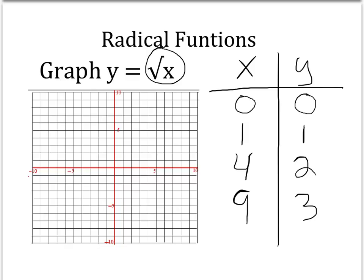So at this point we just graph our points. We start off at (0, 0), go up to (1, 1), then over to (4, 2), and then all the way to (9, 3). We connect our points, and that is the graph of y equals the square root of x.